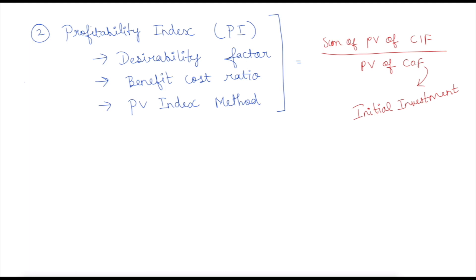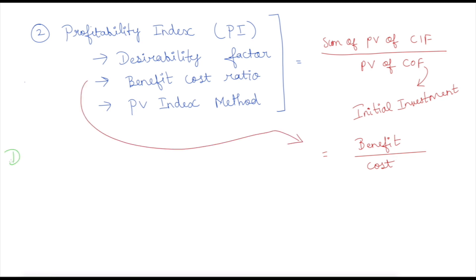In most problems you won't have cash outflows in the intermittent period, so most of the time — not all the time — it will be your initial investment. The sum of present value of cash inflows is your benefit, and the payment made towards your initial investment, which is the cash outflow, is your cost. Thus it becomes benefit divided by cost — this is how this technique derived the name benefit-cost ratio.